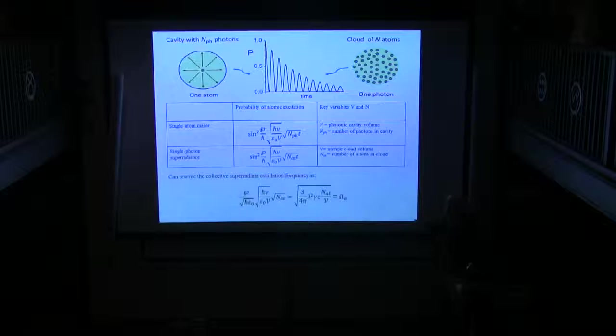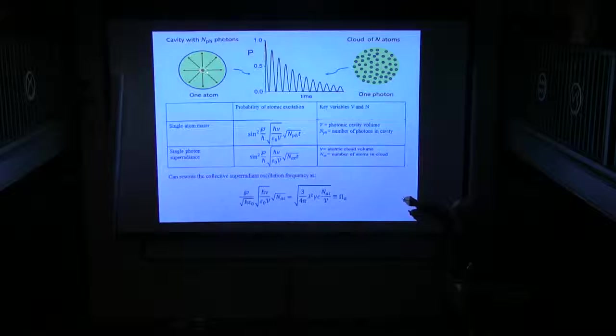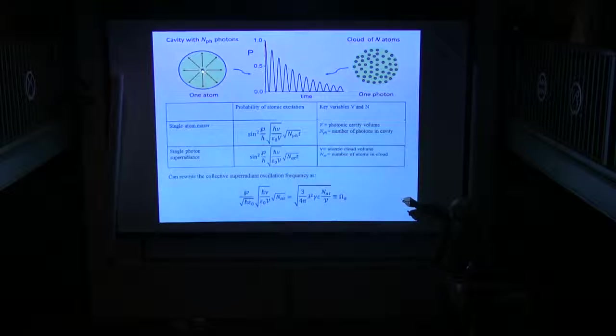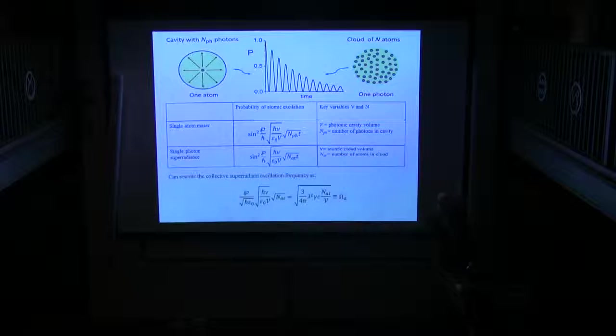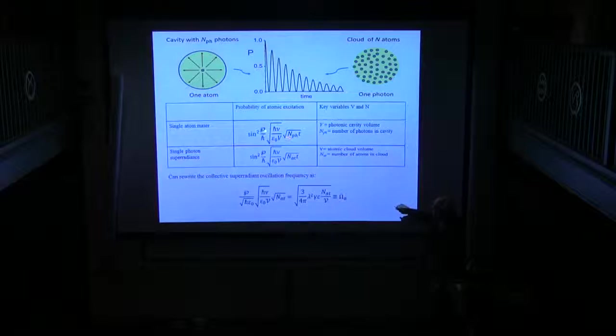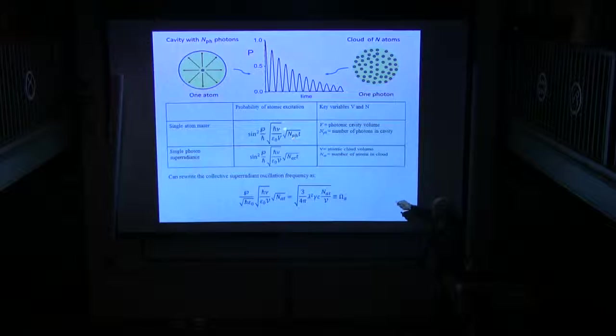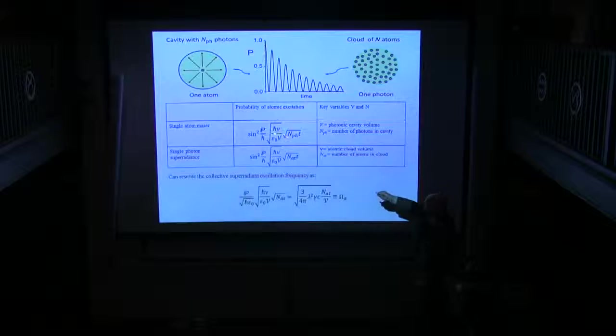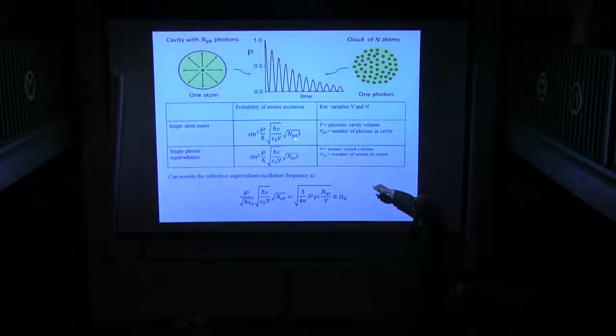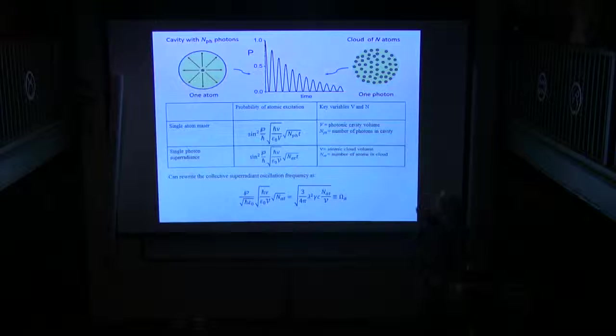Suppose you go back and you consider cavity QED, put one atom in a configuration such that it sees n photons, and ask, what's the probability that the atom will be in the ground state after some time? So the probability of exciting the atom is going to go like such a factor. Matrix element, electric field per photon, where V is the volume, and the square root of the number.